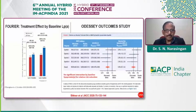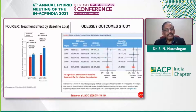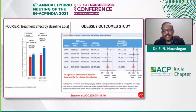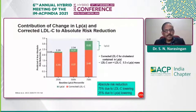Looking at the FOURIER trial using evolocumab: patients with lipoprotein(a) levels beyond the median showed marked improvement, with a hazard ratio of 0.77, indicating a 23% relative risk reduction, an absolute risk reduction of 2.49%, and a number needed to treat of 40 compared to placebo. The ODYSSEY OUTCOMES study showed that relative risk reduction is not directly connected to baseline Lp(a) levels; however, absolute risk reduction depends on baseline lipoprotein(a) levels.